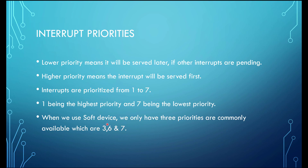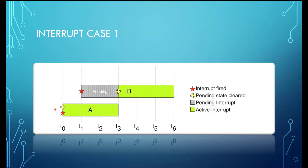Let's consider a simple case where two interrupts occur — interrupt A with higher priority and interrupt B with lower priority. Once an interrupt is fired we clear its flag, indicating that the pending interrupt is being served. During this time another interrupt fires, but since interrupt A has the higher priority, interrupt B remains in the pending state until interrupt A finishes.